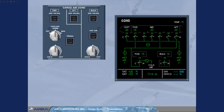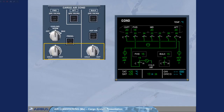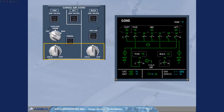For normal operation of the cargo conditioning system, the only pilot inputs required are: to check that all push-button switches have no white light on, to set the required temperatures, and if installed, to set the cooling selector to off. Note: the mid-position of the temperature selectors corresponds to approximately 15 degrees Celsius, the cold position to 5 degrees Celsius, and the hot position to 25 degrees Celsius.